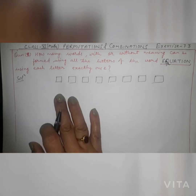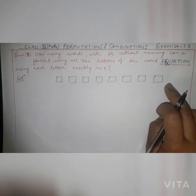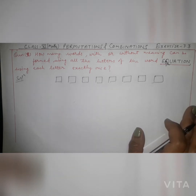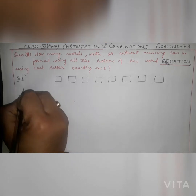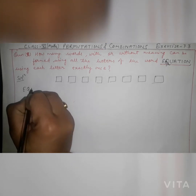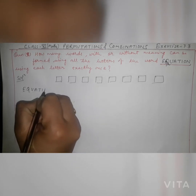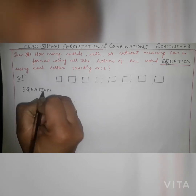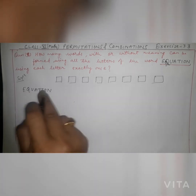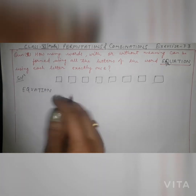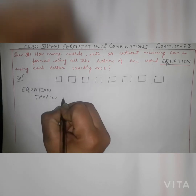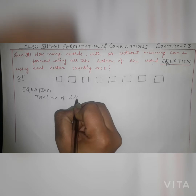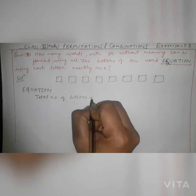First of all, we write the total number of letters. In the word EQUATION, you can see there are 8 letters. So total number of letters given is 8. We need to find the total number of words that can be formed.